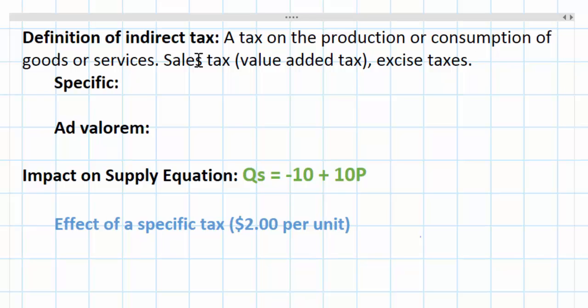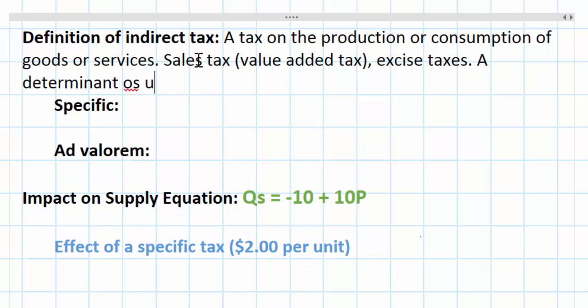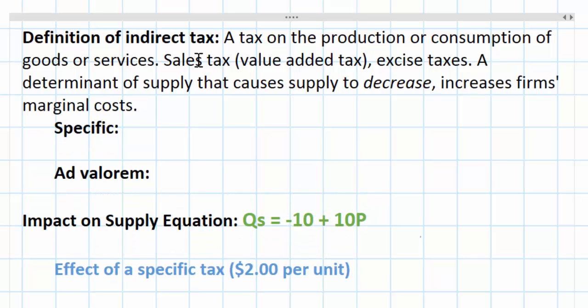Indirect taxes act as a determinant of supply and lead to a decrease in the supply of any good on which the tax is placed. Essentially, a tax increases the marginal cost of provision of a good. So knowing that the supply curve also represents the industry's marginal cost curve, taxes increase the marginal costs, which have the effect of shifting the supply curve up or inwards graphically.